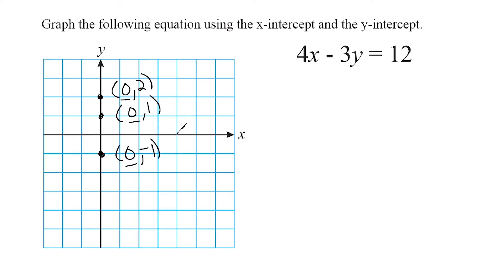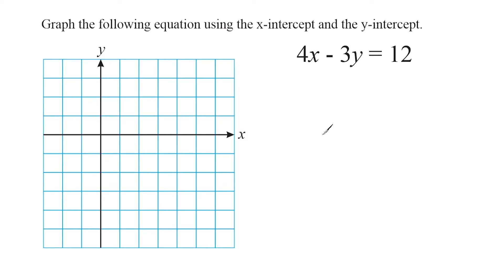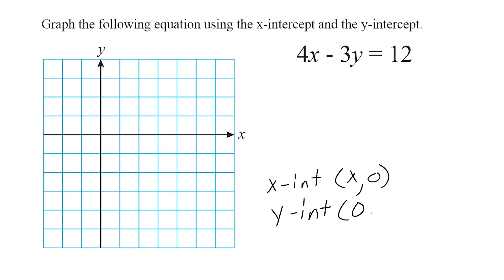Same thing for the x-intercept — any point directly located on the x-axis will have a y value of zero. For example, this point right here is located at four, zero, and this point is located at five, zero, and so forth. So basically what we need to remember is: for our x-intercept, the y value is going to be zero when figuring out what x is. And when determining the y-intercept, the x value is going to be zero when figuring out what y is.